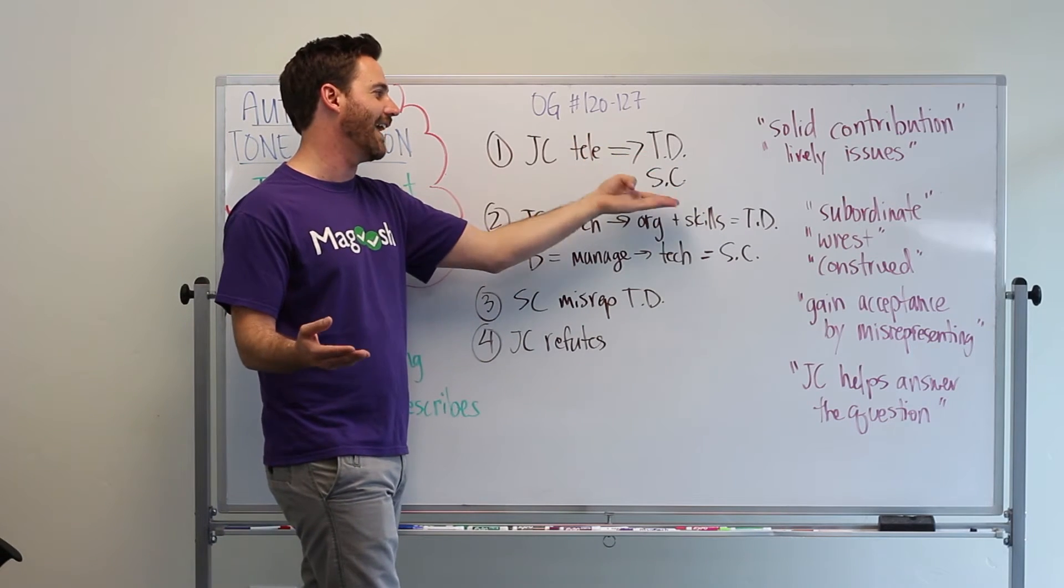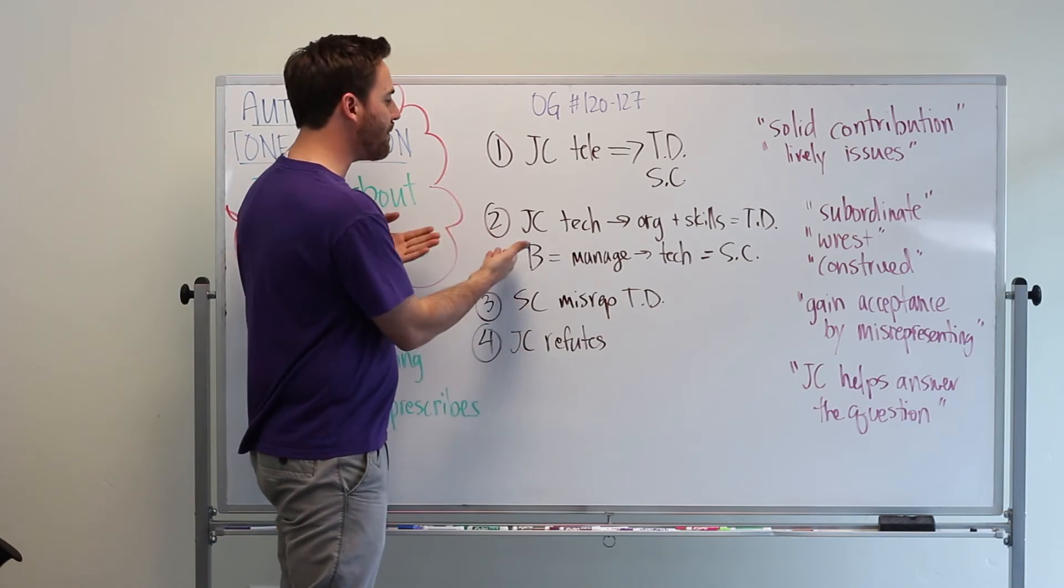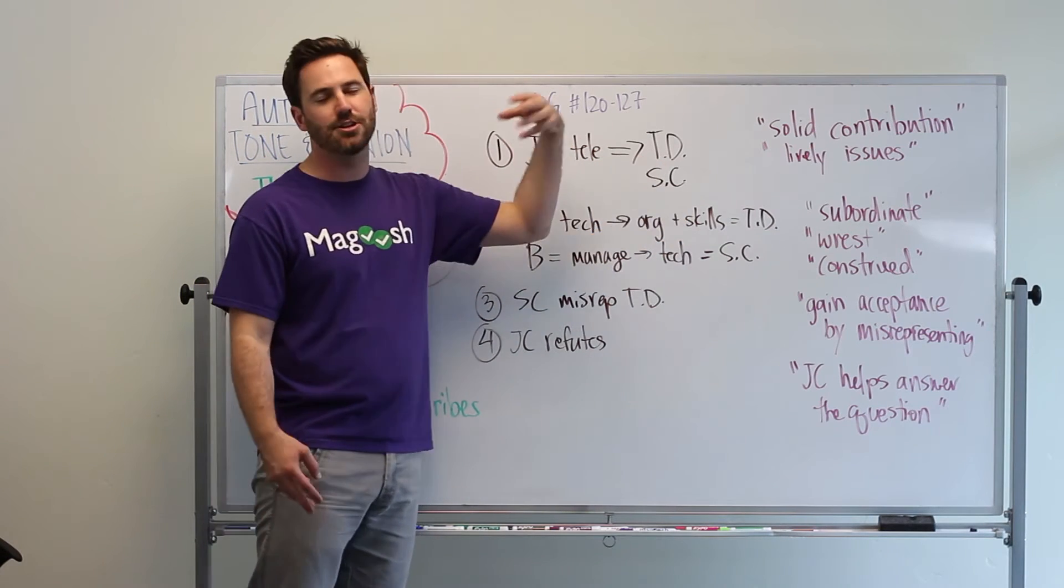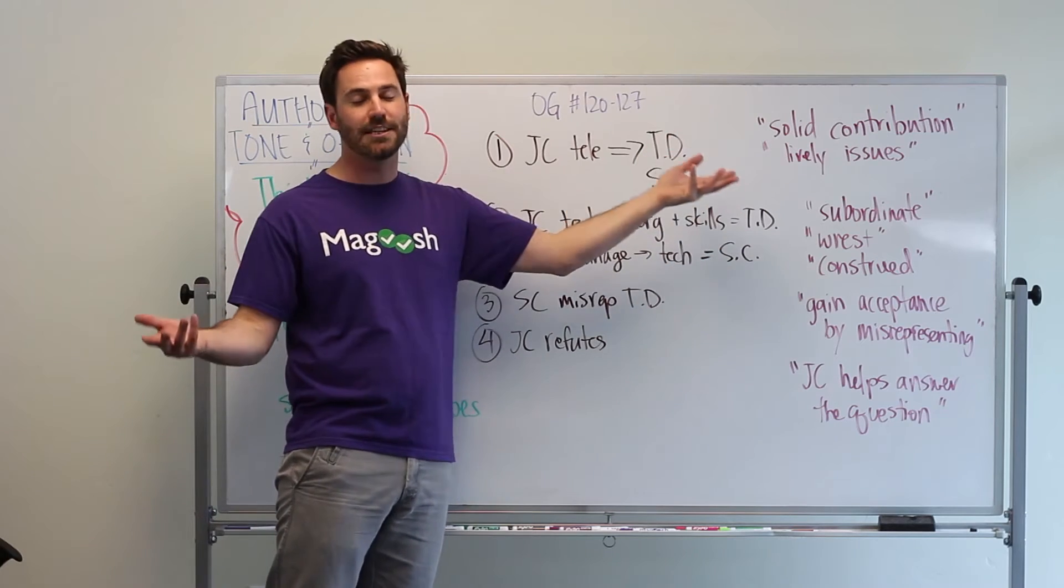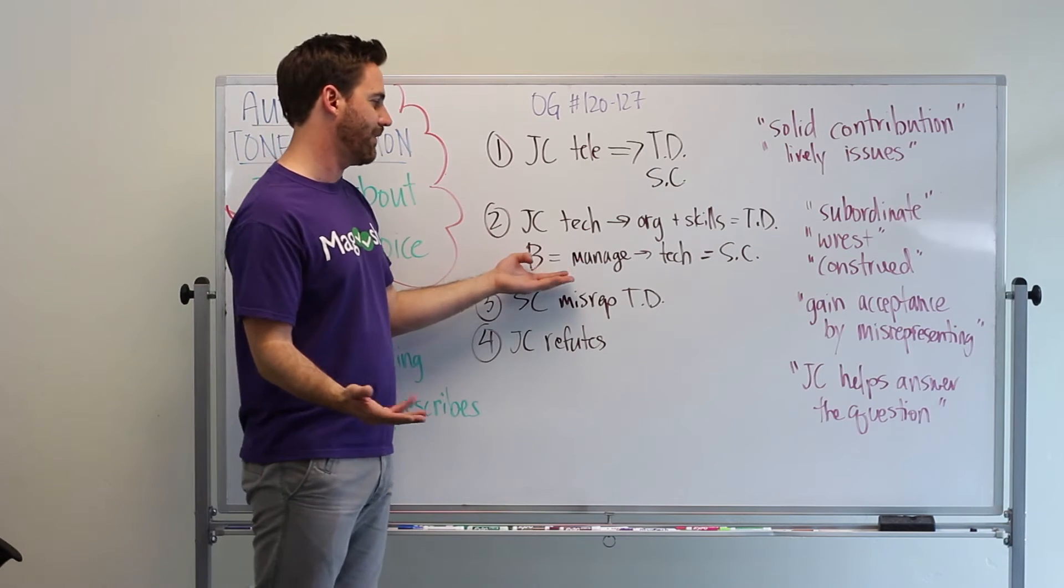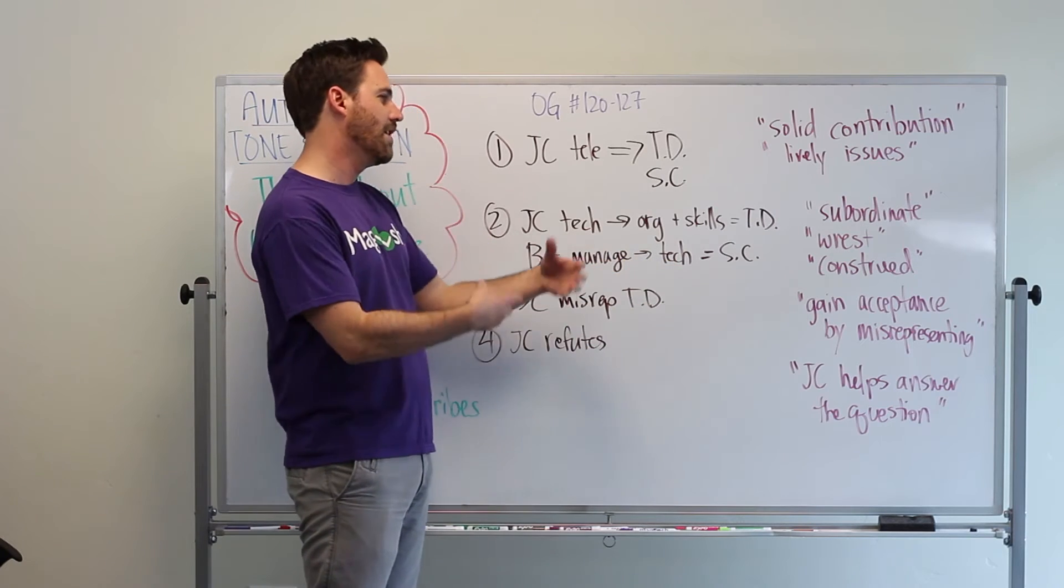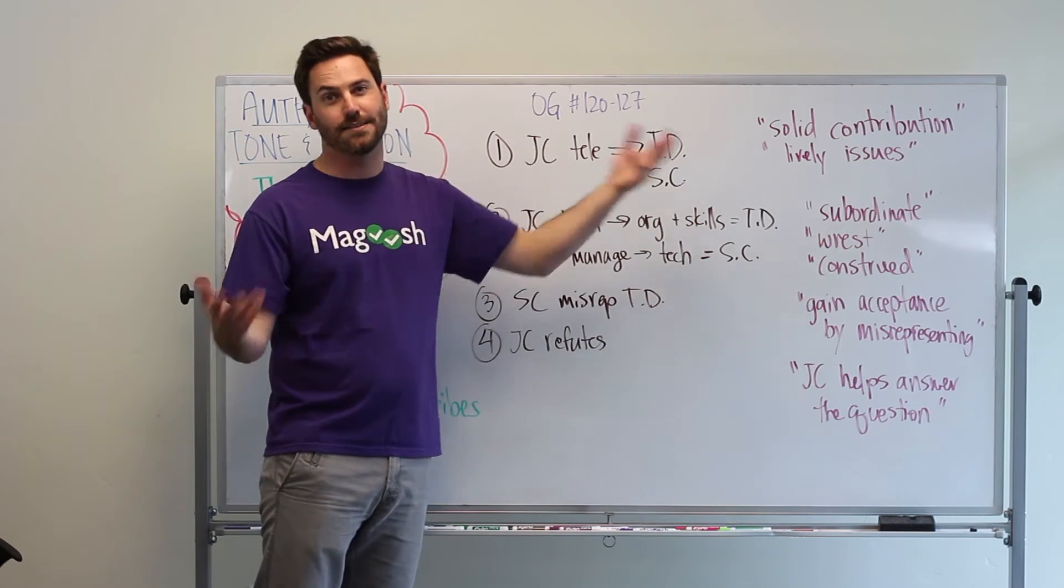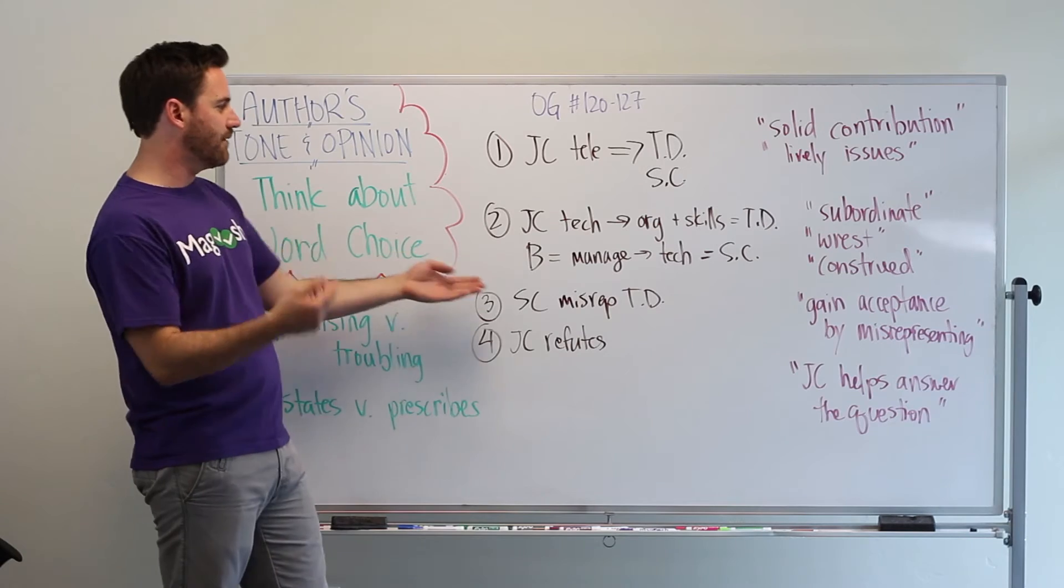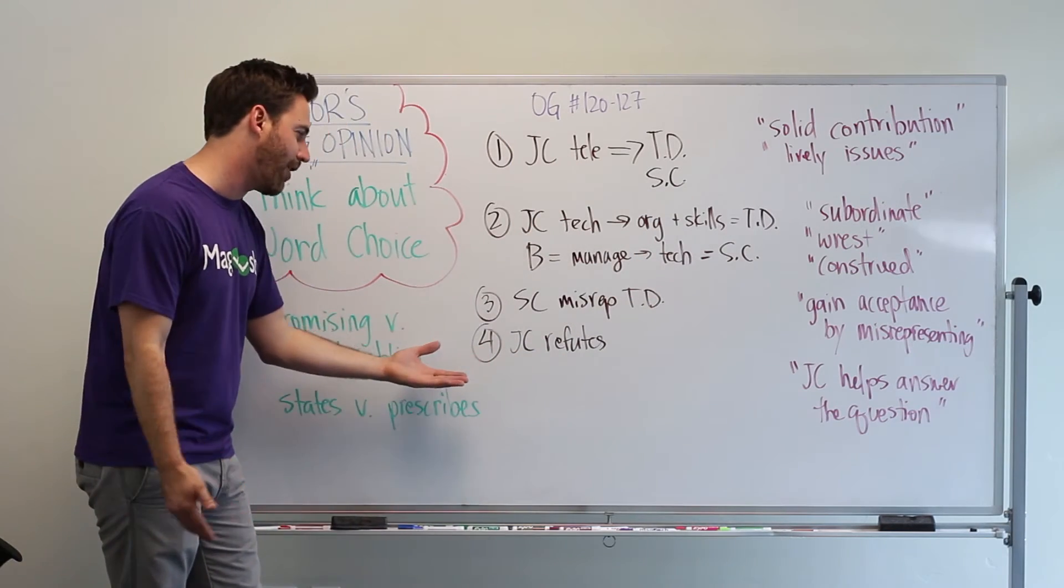In the second paragraph, JC talks about how technology leads to changes in an organization and the skills, and this is where we learn what TD is. I didn't know what it was until I got there. This other guy, B, I don't even remember his name. He thinks that managers actually control technology and make those decisions, and so that's what SC is. That's how we learn about SC. Third paragraph, we learn that the SC people misrepresent the TD people, and then in the fourth paragraph, JC refutes it.